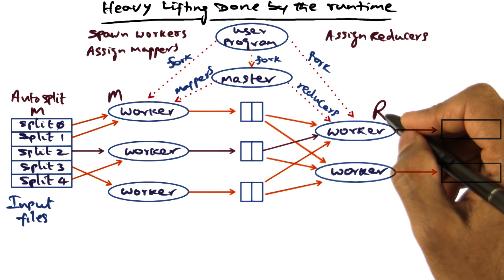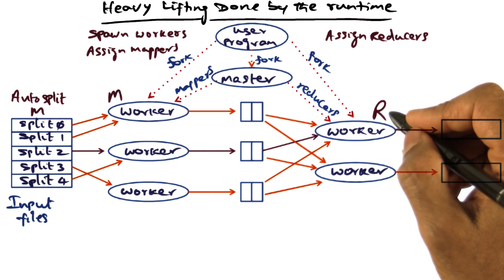Recall in the example I gave you about looking for specific names in an input corpus. The number of unique names is something that the app developer is specifying. That's where the number R comes from.